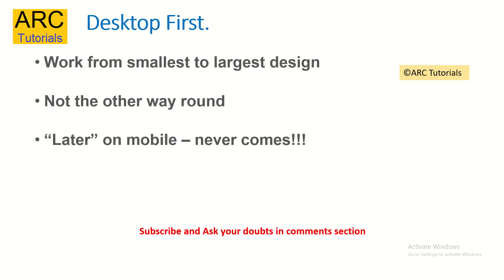This is the most common thing that I hear in my experience working on different large applications, which is: let's build for desktop first and then we will work on mobile later. Trust me, this is the recipe for disaster. Whenever you're designing, always start with the smallest target. If your application is supposed to work with mobile, start with mobile first. Don't go the other way round — from desktop to mobile — because later on mobile never comes. Your application will have a huge number of defects and issues of rendering. Always target mobile first and then grow to the largest design.